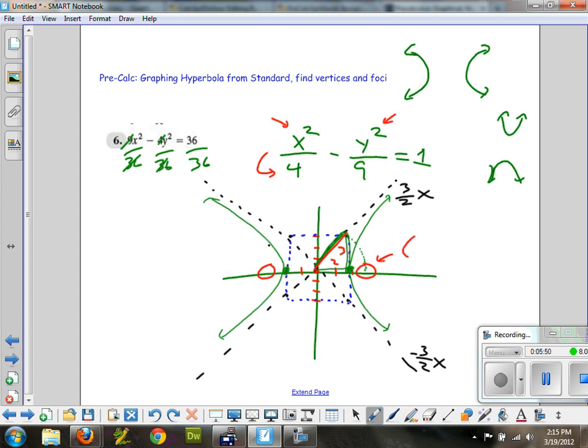So this point is at root 13, zero. It started, the center started at zero, so that's where that point is. It's at root 13, zero. And obviously over here we're going to have negative root 13, zero for that focus point. So there's the two focus points. Remember the vertex is on the box. People draw the vertex in many different places. The vertex is on the box.